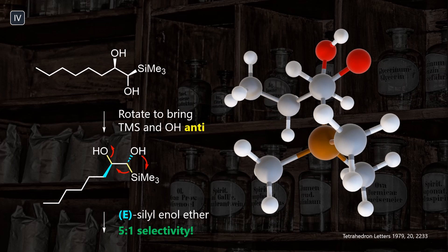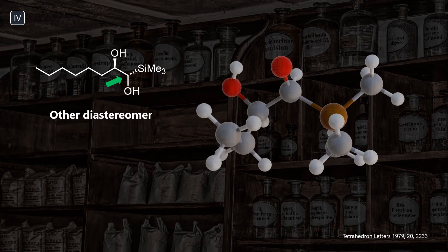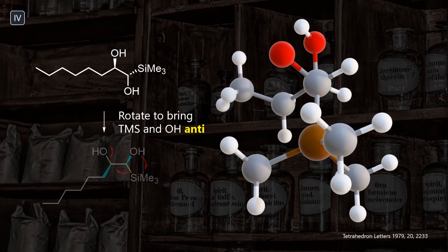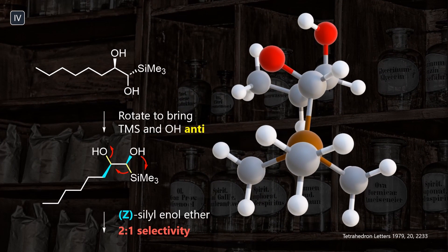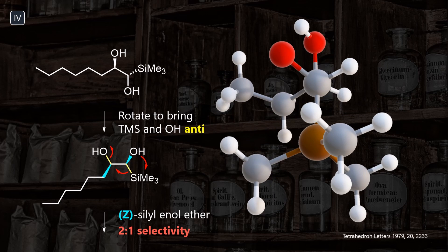If we assume that this conserves the configuration of the educt, we can nicely predict that the anti arrangement encodes the E-olefin in the product. As always, we should check the other diastereomer as well. This one leads to the opposite Z-olefin, with a slightly lower selectivity of 2 to 1. This could suggest that the pathway is energetically more challenging, potentially proceeding through a more stepwise mechanism which erodes the selectivity.